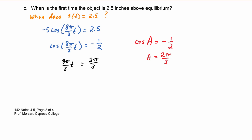So we come back to our equation and say that the argument of our cosine function — 8π/3 times t — has to equal 2π/3. We multiply both sides by the reciprocal, 3/(8π), on each side. The threes cancel, the pis cancel, and 2 goes into 8 four times, so t = 1/4 of a second.